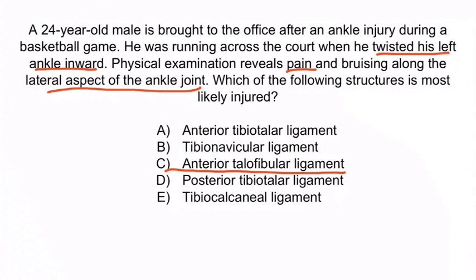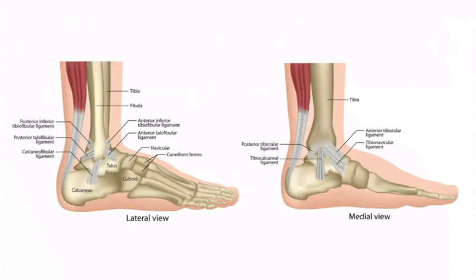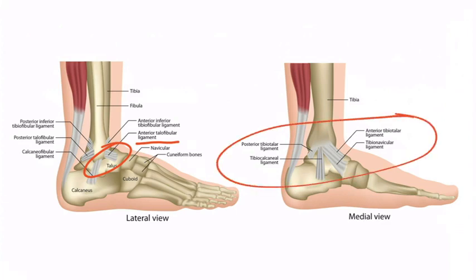A, B, D, and E are all medial ankle ligaments, which are much less common and would present with pain along the medial aspect of the ankle joint. From the overview image, notice that the ATFL is right here, so an injury presents with pain along the lateral aspect of the ankle joint. All of the other choices in the question were medial ankle ligaments.